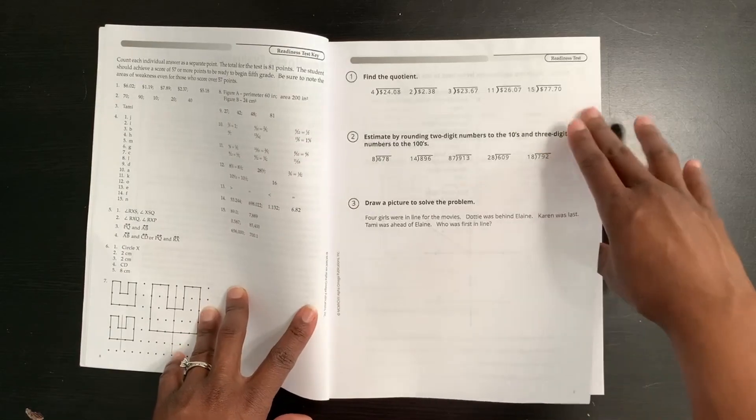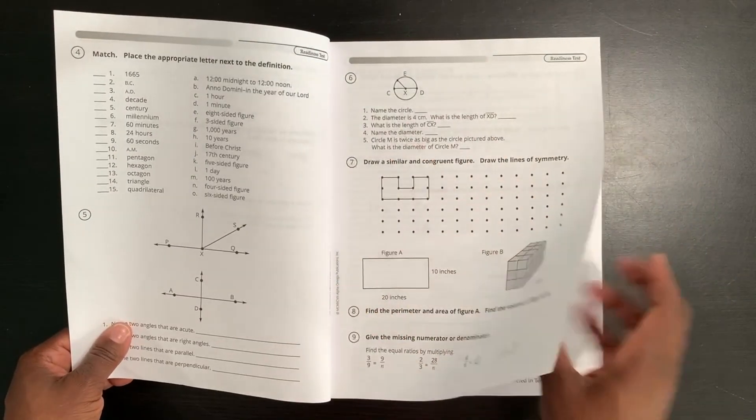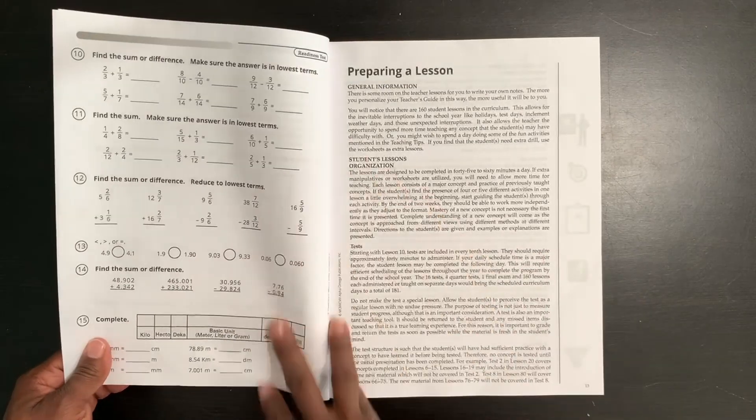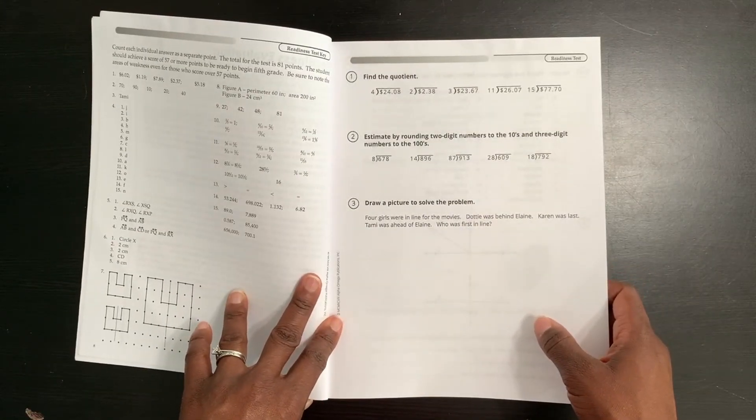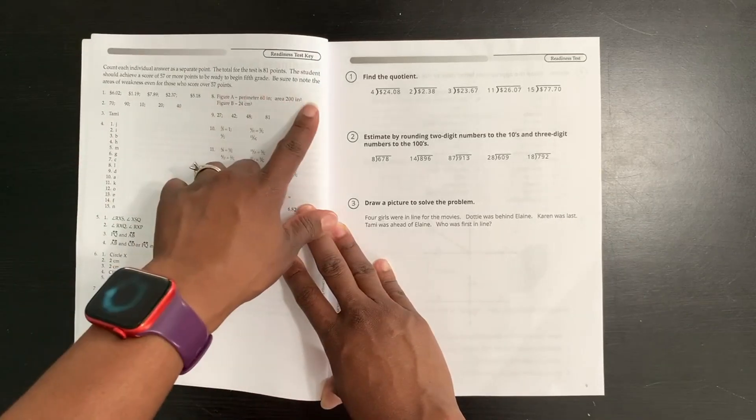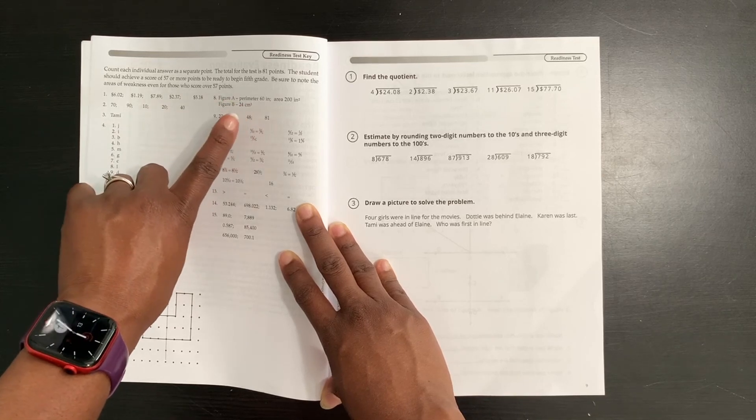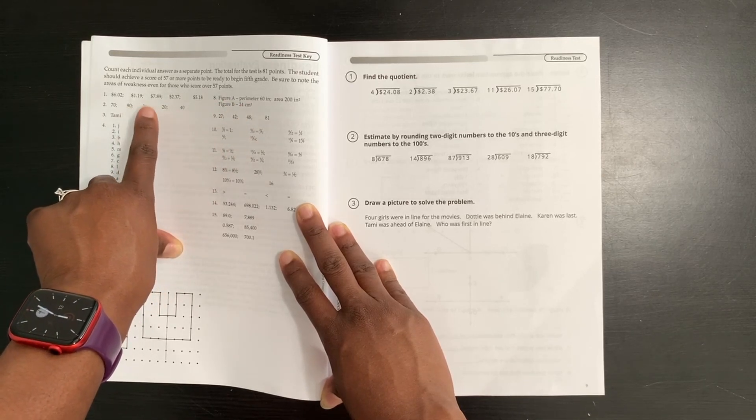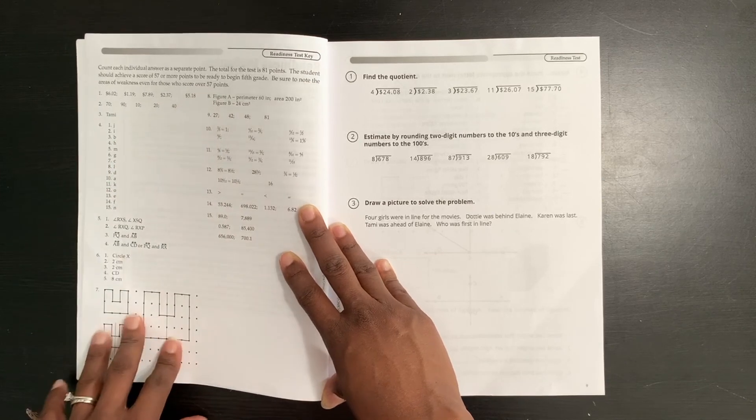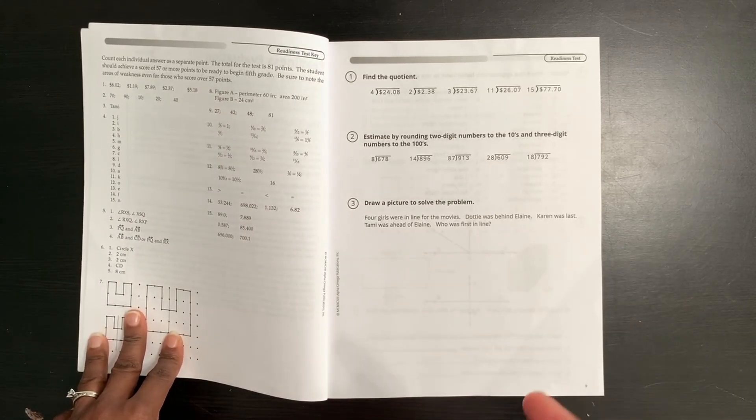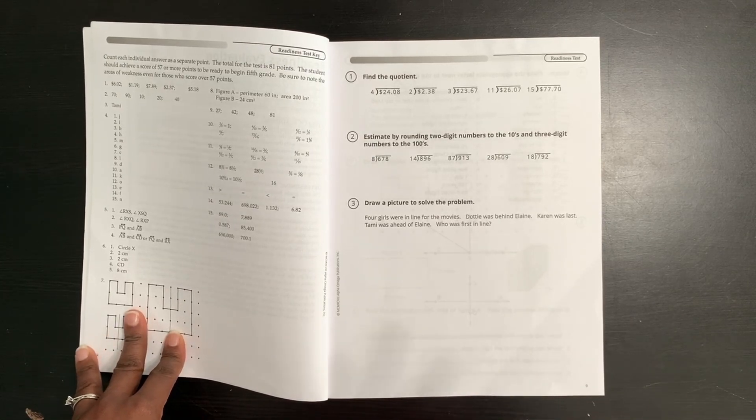This is the key to it and then here are the questions, the actual readiness questions here. Based on what your child would make on that, would determine whether or not they need to stay at this level or go down to a lower level. It tells you right here it says the student should receive a score of 57 or more points to be ready to begin fifth grade. Be sure to note that areas of weakness even for those who score over 57 points. So you want to be able to figure out where your child would need help and that might would direct your teaching for them a little bit different.